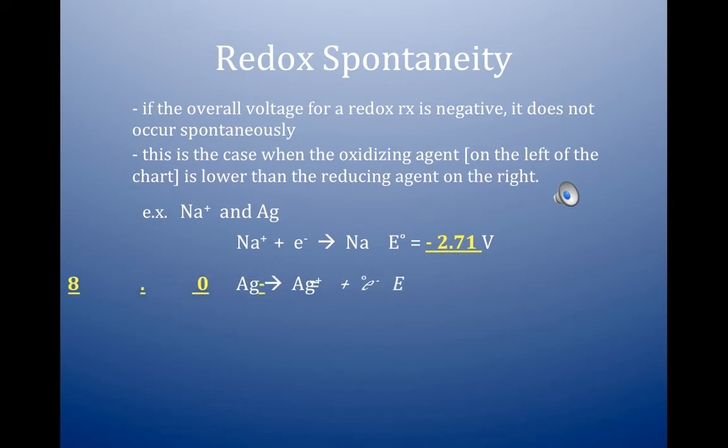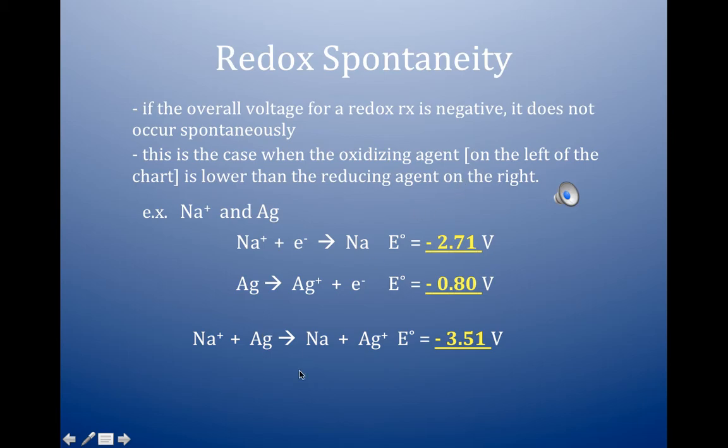Silver is going to be plus 0.80 volts, except we're oxidizing it, so that plus becomes minus. We're going to take those two numbers, minus 2.71. We're going to add minus 0.80. We're going to get more negative. And, we get minus 3.51 volts. And, when we look at the chart there, located like this. Sodium way down on the left. Silver quite a ways up on the right. And, that's definitely a non-spontaneous position. So, the reaction does not occur. Not occur means non-spontaneous.